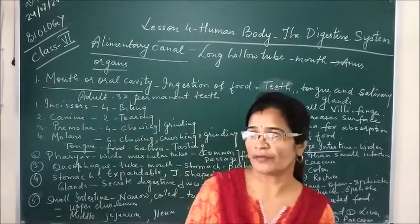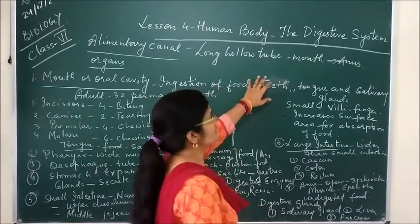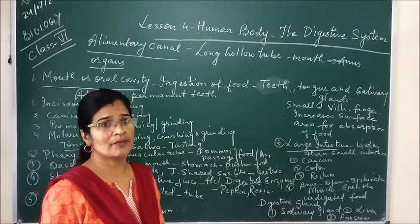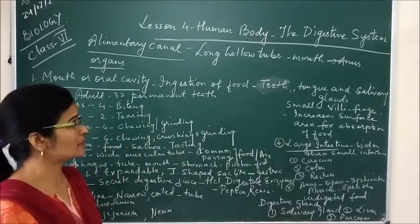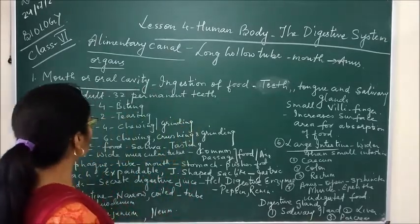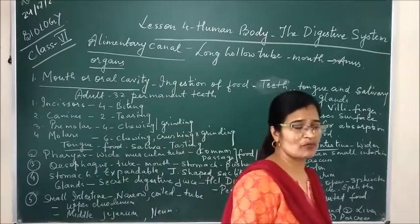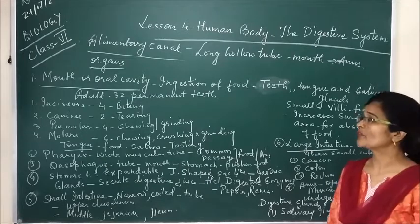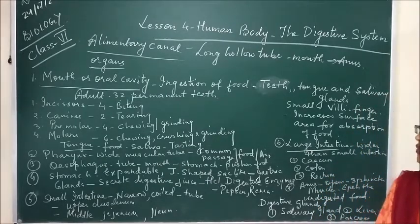Good morning students. Today I will continue the lesson on the human body digestive system and class biology. Today I will explain the alimentary canal, the different organs found in the alimentary canal and the functions of each organ. As you all know, the alimentary canal — we can also say it is the digestive system of our body — consists of different organs and each organ has particular functions.